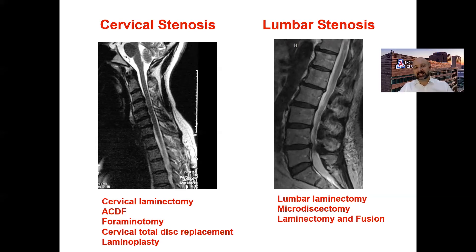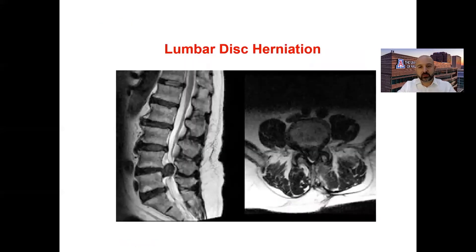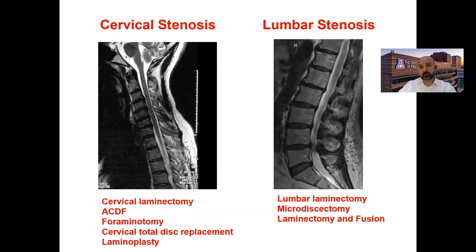For the neck, procedures include cervical laminectomies, ACDFs, and foraminotomies. For the lumbar spine, it's laminectomies, fusions, and microdiscectomies — these constitute 80-plus percent of what most spine surgeons do. This is an image of a lumbar disc herniation. There are now exciting techniques like endoscopy and other minimally invasive approaches to perform these surgeries. Degenerative cervical and lumbar disease is the vast majority of pathologies spine surgeons deal with.